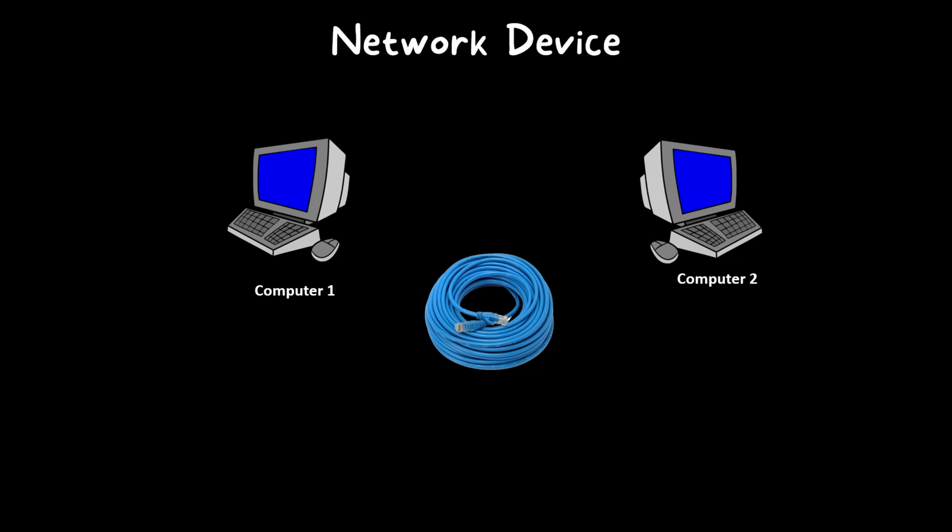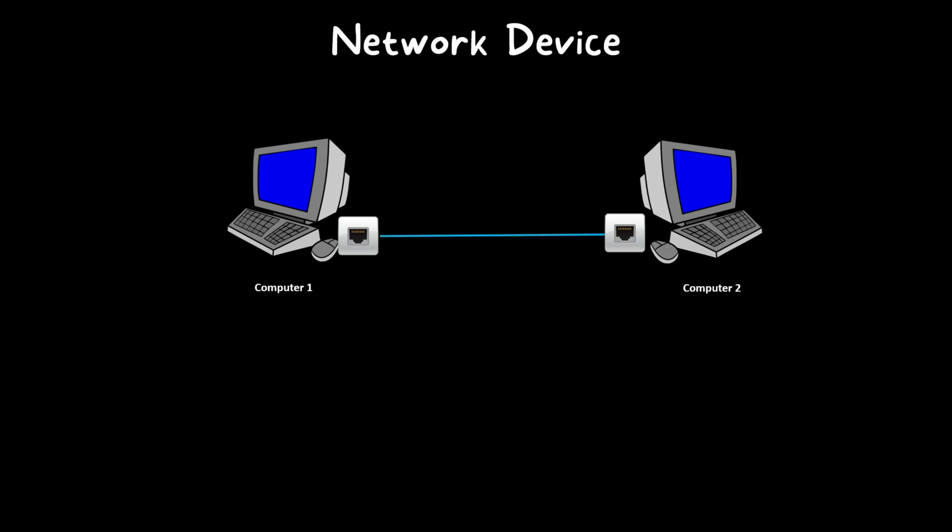We need to connect a network cable such as a Cat5 or Cat6 cable from computer 1 to computer 2. Any computer has an interface called a network interface card. This network cable will be plugged into the network interface card at both sides. Then we can establish network connectivity by providing an IP address. In this way, we successfully connect computer 1 and computer 2, and communication is established.